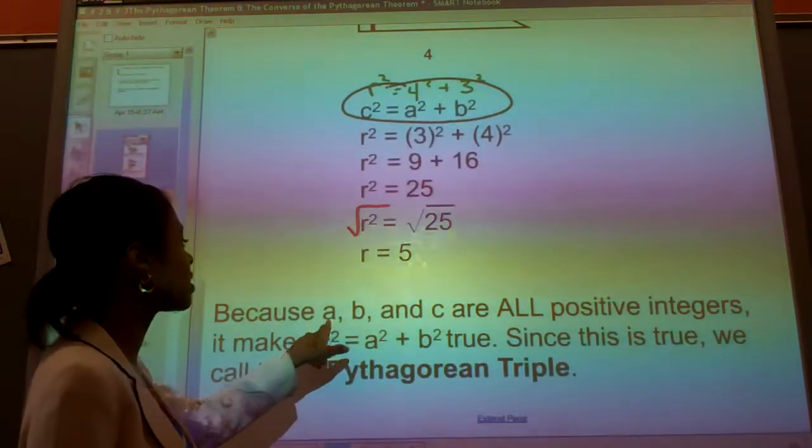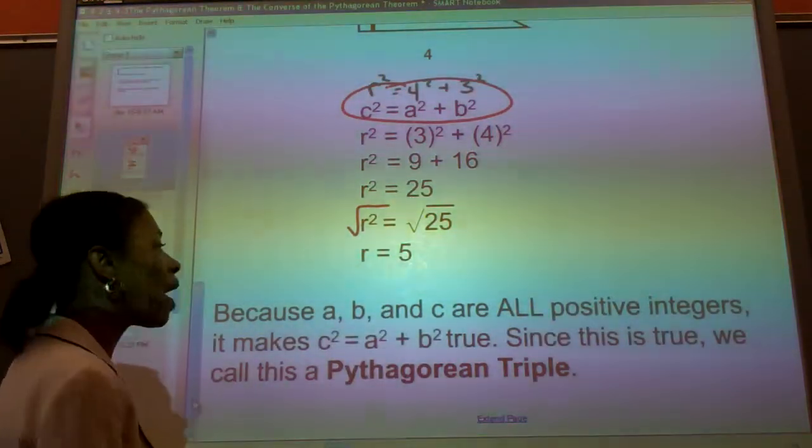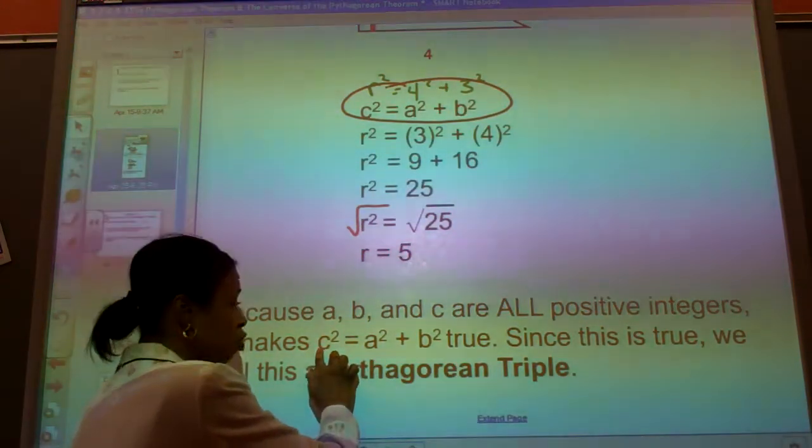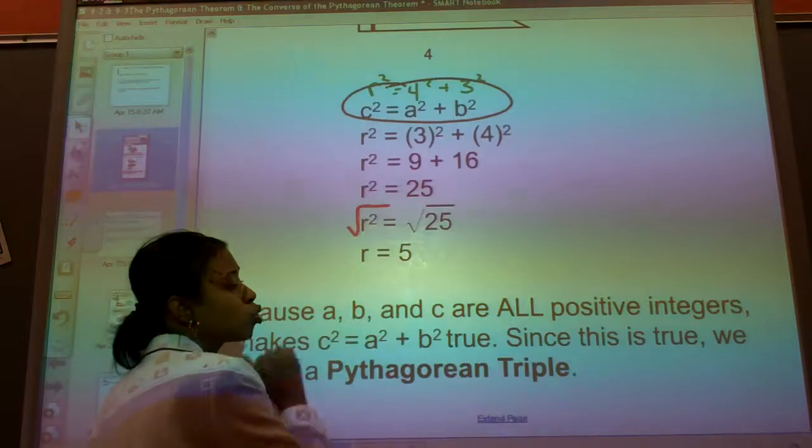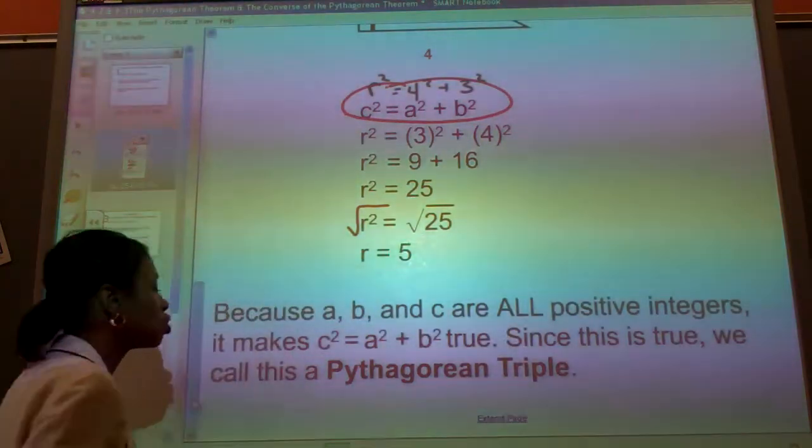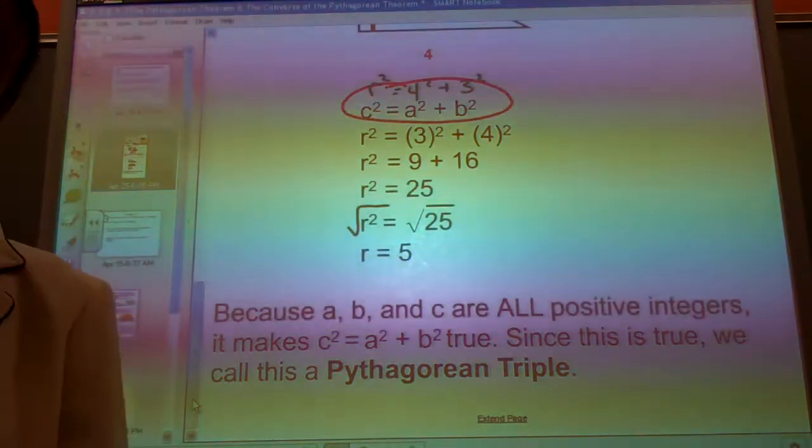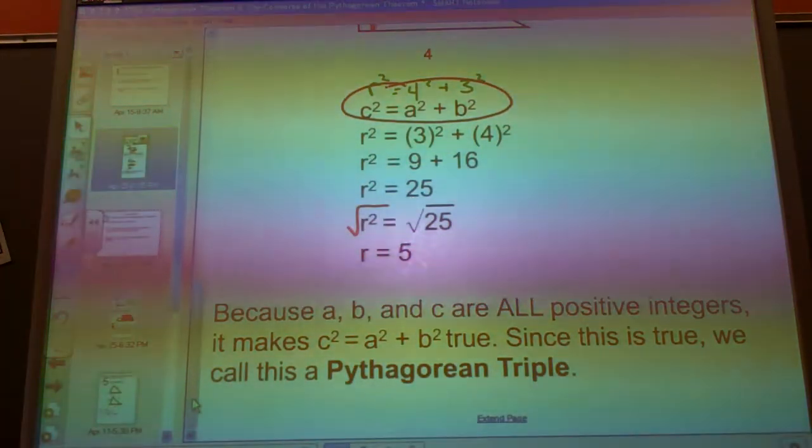And again, as I've already stated, because A, B, and C are all positive integers, it makes C squared equal to A squared plus B squared true. And since this statement is true, we call this again a Pythagorean triple. And those are your notes for 9-2.